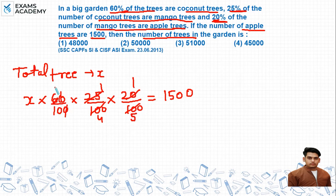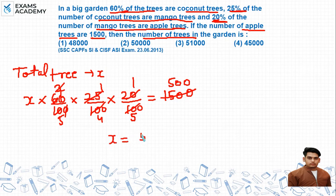After cancelling, we get X equals 50,000, which is option number 2.